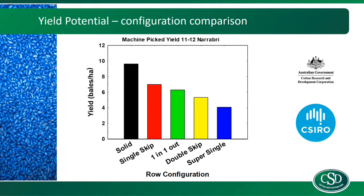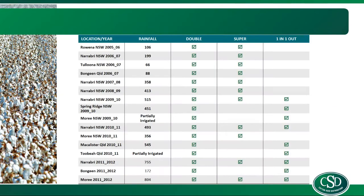Now I'll touch on some yield potentials and differences between the configurations. This is all from some research done a few years back with CSIRO in collaboration with CRDC and Cottonseed Distributors. This graph is just a simple one showing the yield from those different crops. You can see solid was the highest yield; however, there were some pretty good seasons thrown in there — some of these crops saw some pretty decent rainfall, similar to what we've seen this season, where the solid would have been much more suited.